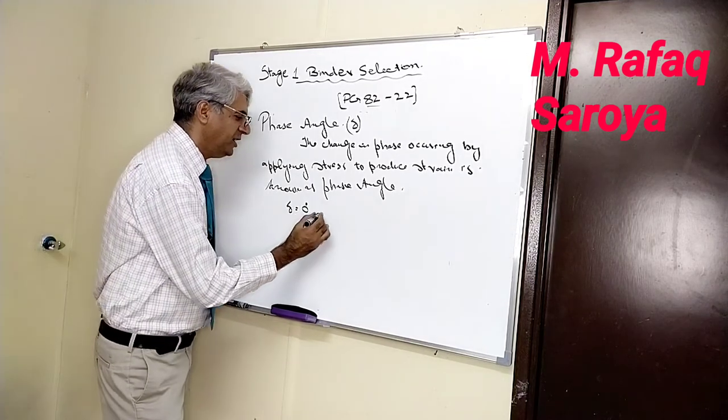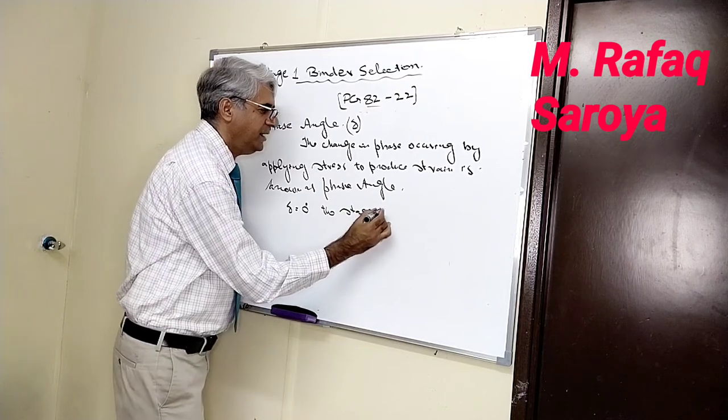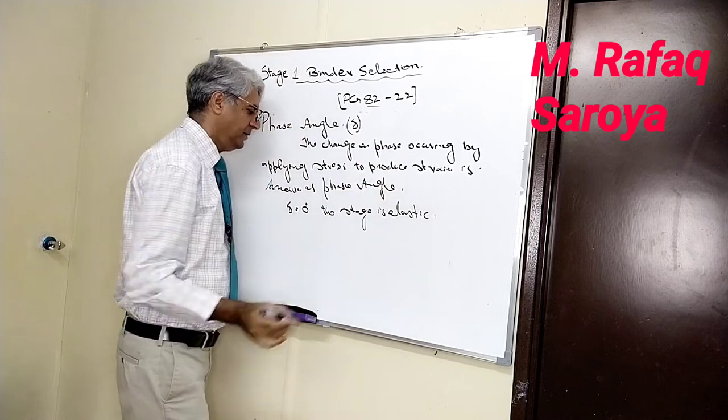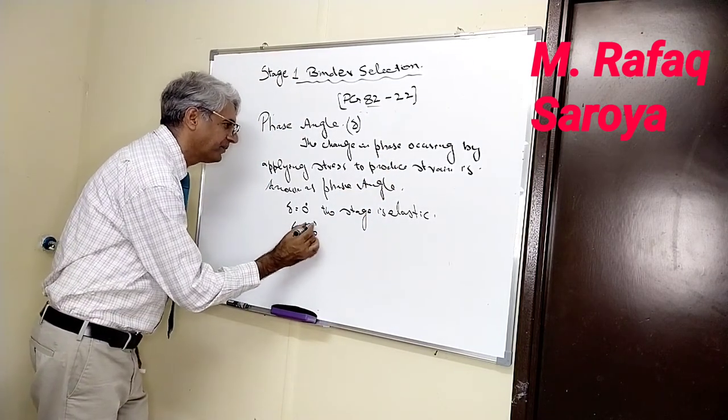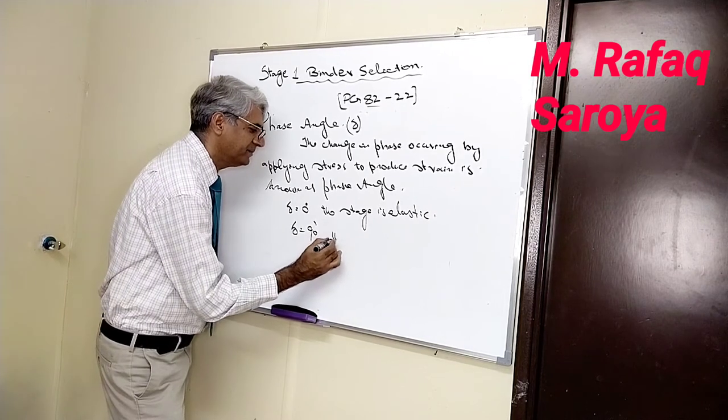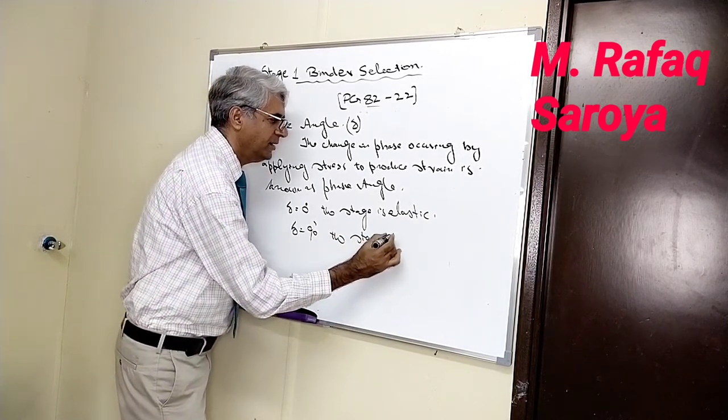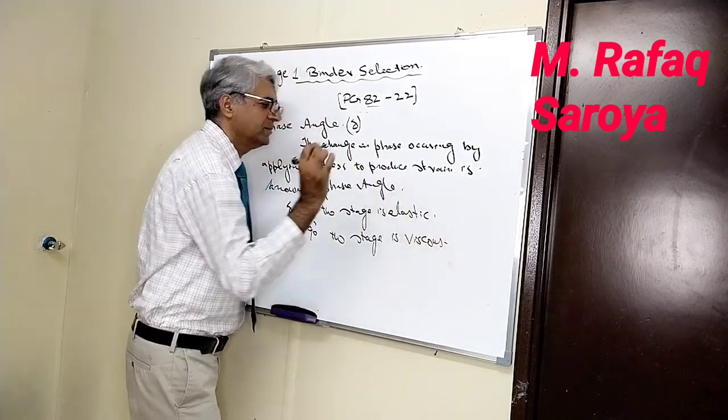the stage is elastic. When this phase angle is equal to 90 degree, the stage is viscous. Clear it.